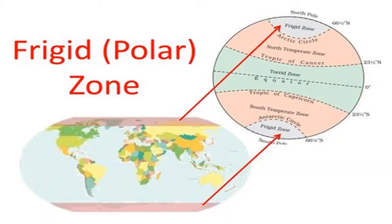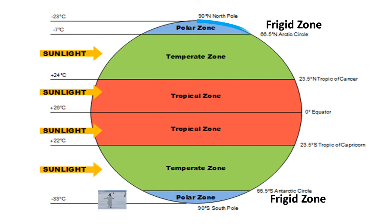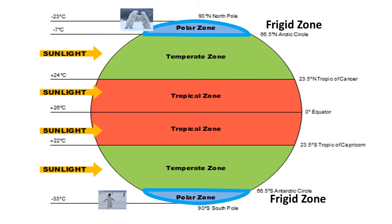Next, we have the frigid zone, also known as polar zones. There are two polar zones — one in the southern hemisphere and the other in the northern hemisphere. The word frigid means very cold. The north frigid zone lies between the Arctic Circle and the North Pole, and polar bears are found here. The southern frigid zone lies between the Antarctic Circle and the South Pole, and penguins are found here.